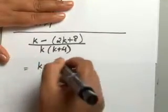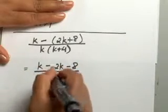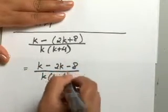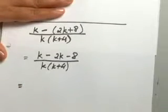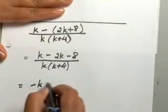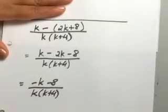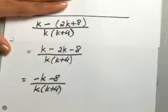You will end up with K minus 2K minus 8. Denominator stays the same. And combining your like terms together, you will end up with negative K minus 8 over K times K plus 4.